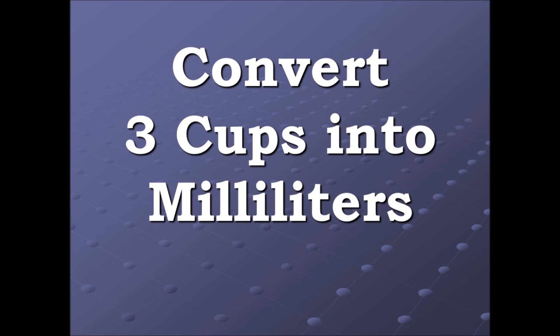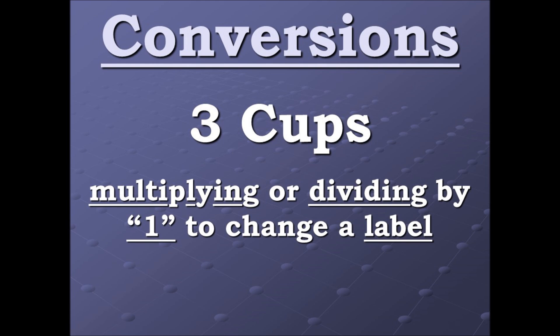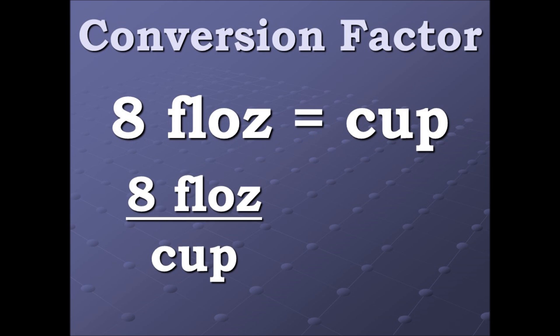Here's our question: three cups converts into how many milliliters? We have our three cups and what we're going to be doing is multiplying or dividing by one in an effort to change a label. Here's our first conversion factor: since both terms are equal, we can put them into a ratio, and eight fluid ounces divided by one cup equals one.